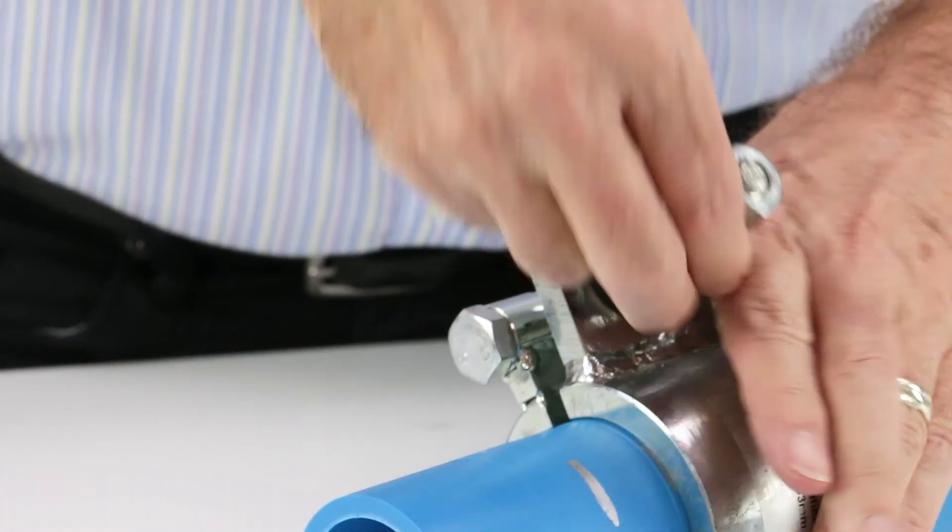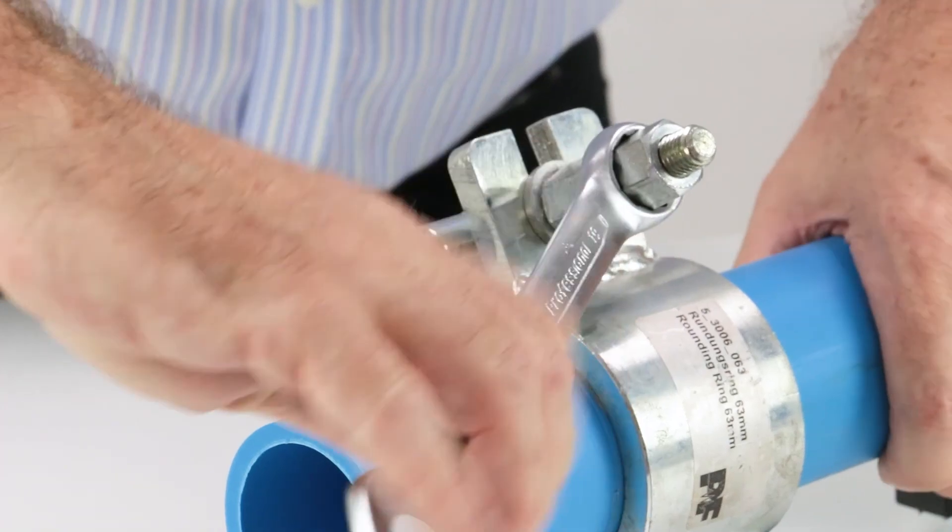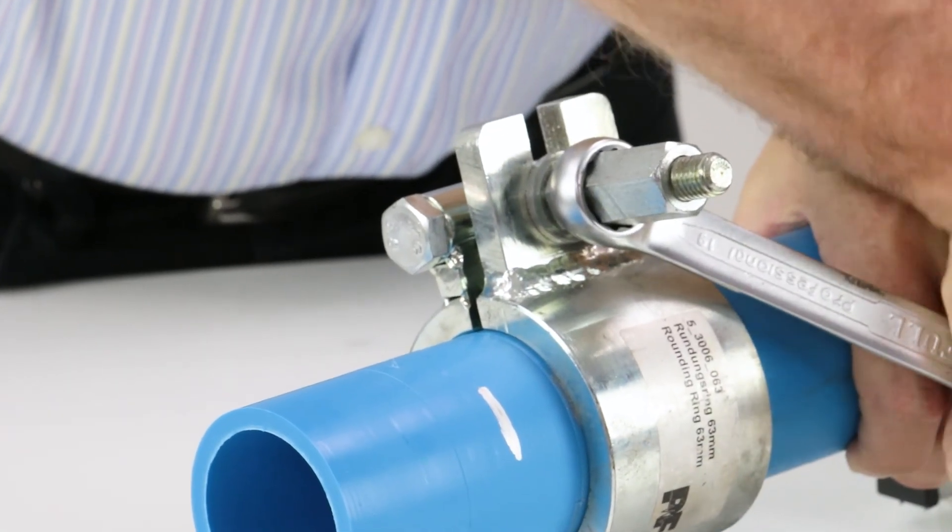This is also a good time to attach the re-rounding tools, which we recommend in all cases despite how circular your pipe may seem. There is almost always slight ovaling, especially when they've been in a coil.